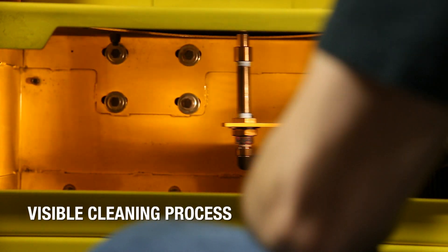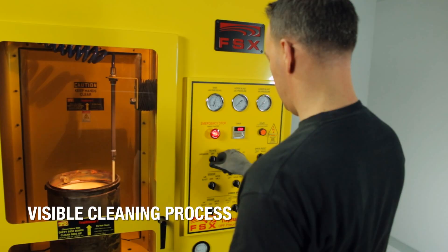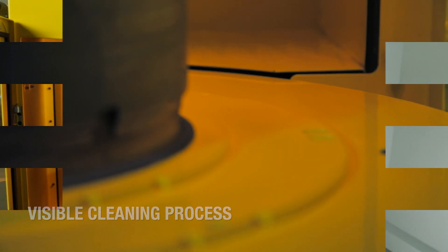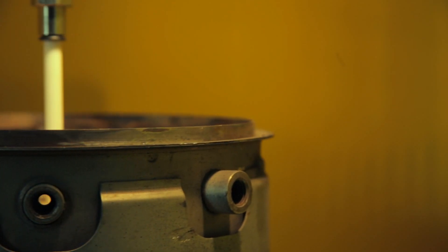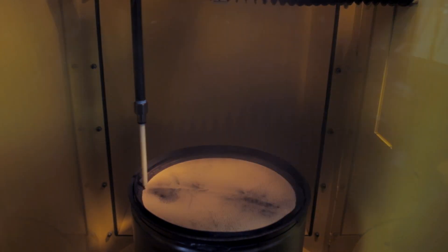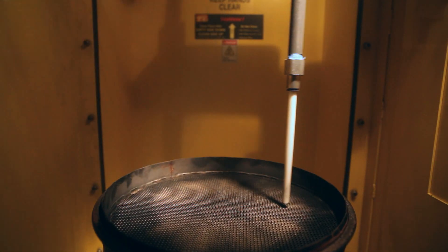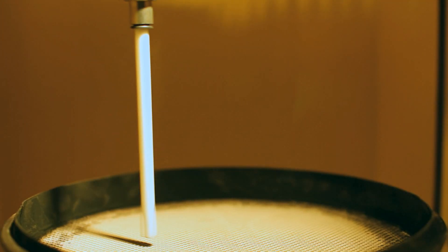However, every DPF is different, and the visible cleaning process allows the operator to see when the cleaning is complete. If the DPF is internally damaged, particulate will be observed escaping out of the clean side of the filter in the first two minutes of cleaning. This diagnostic feature is exclusive to the Trap Blaster.